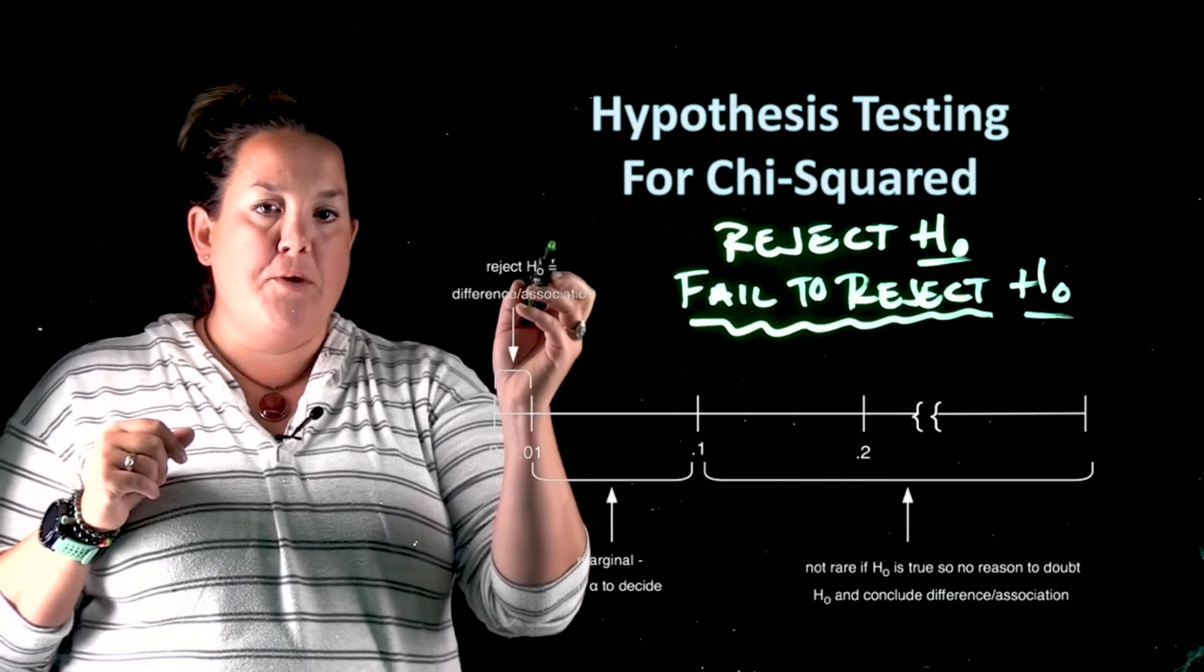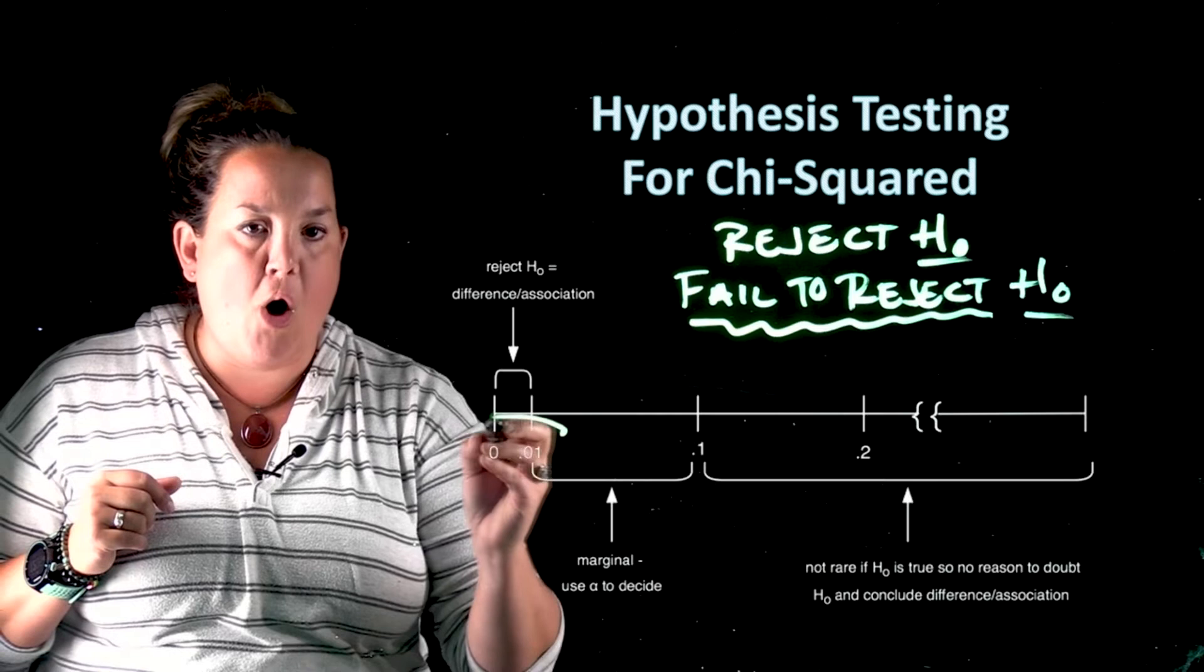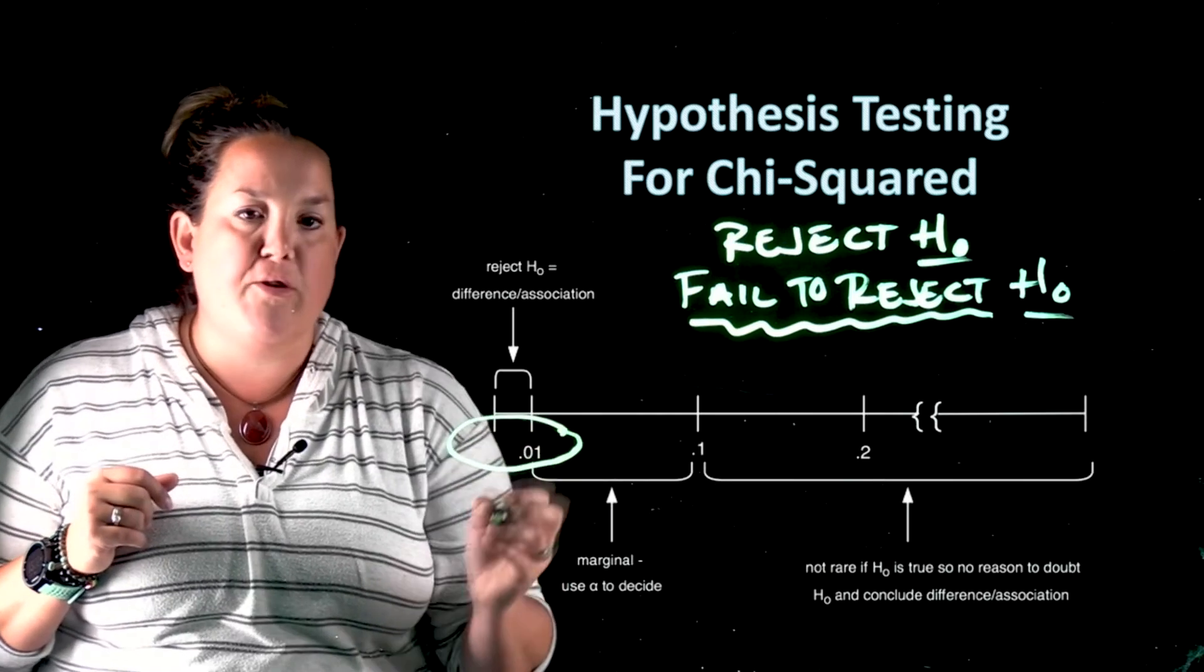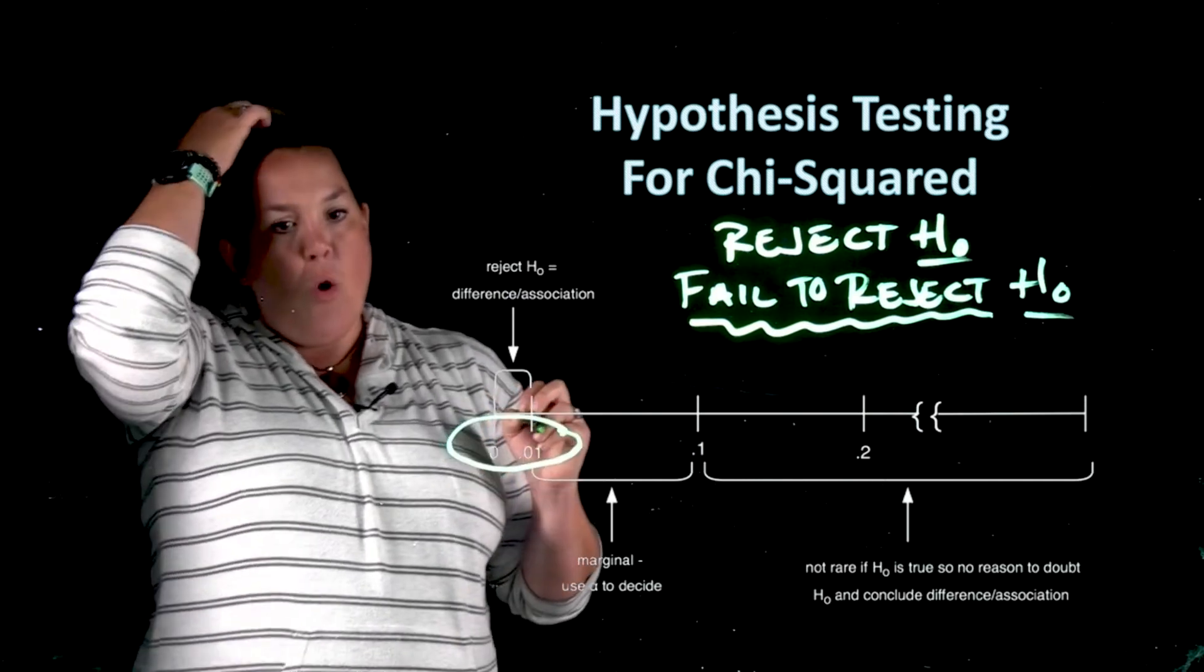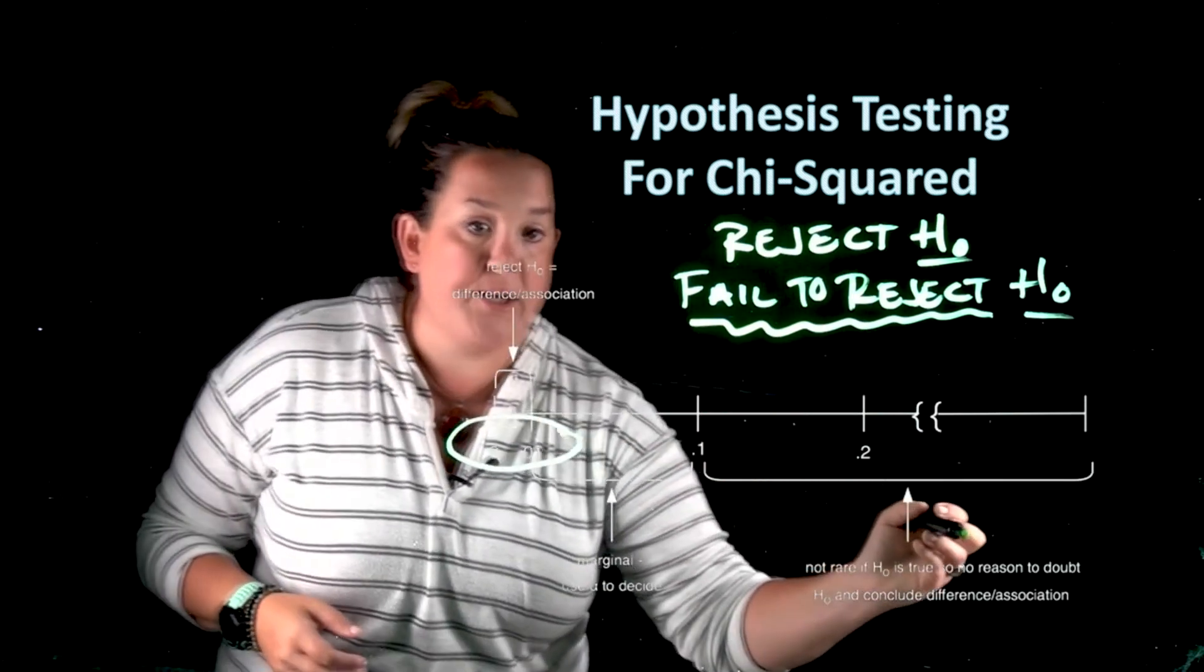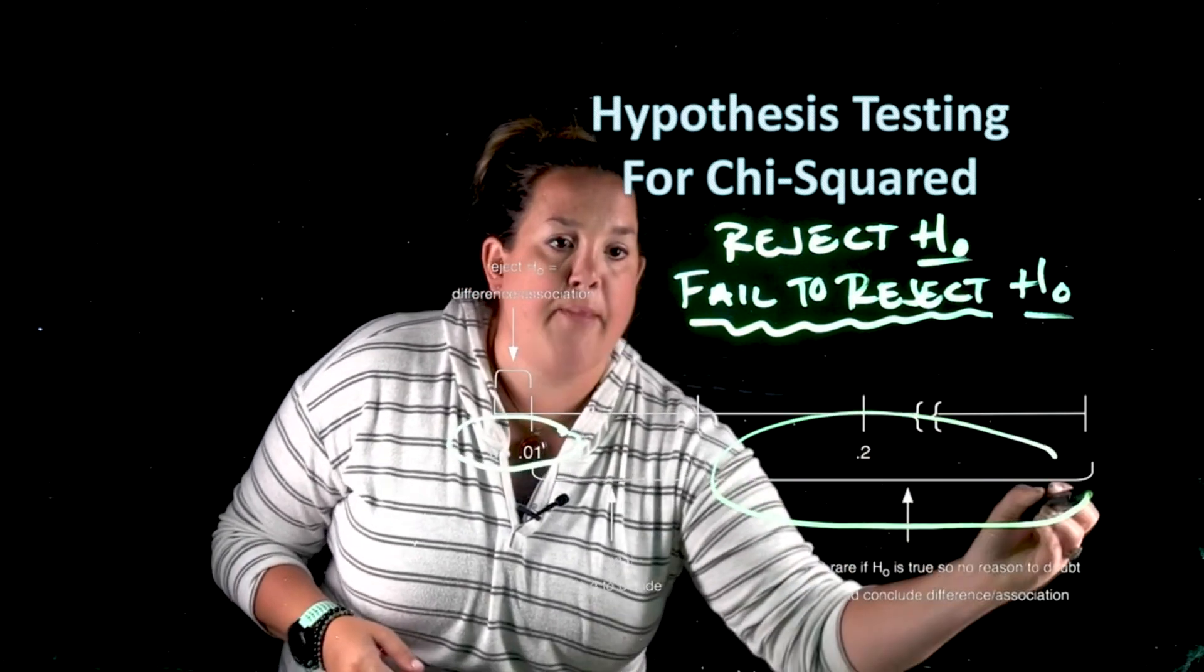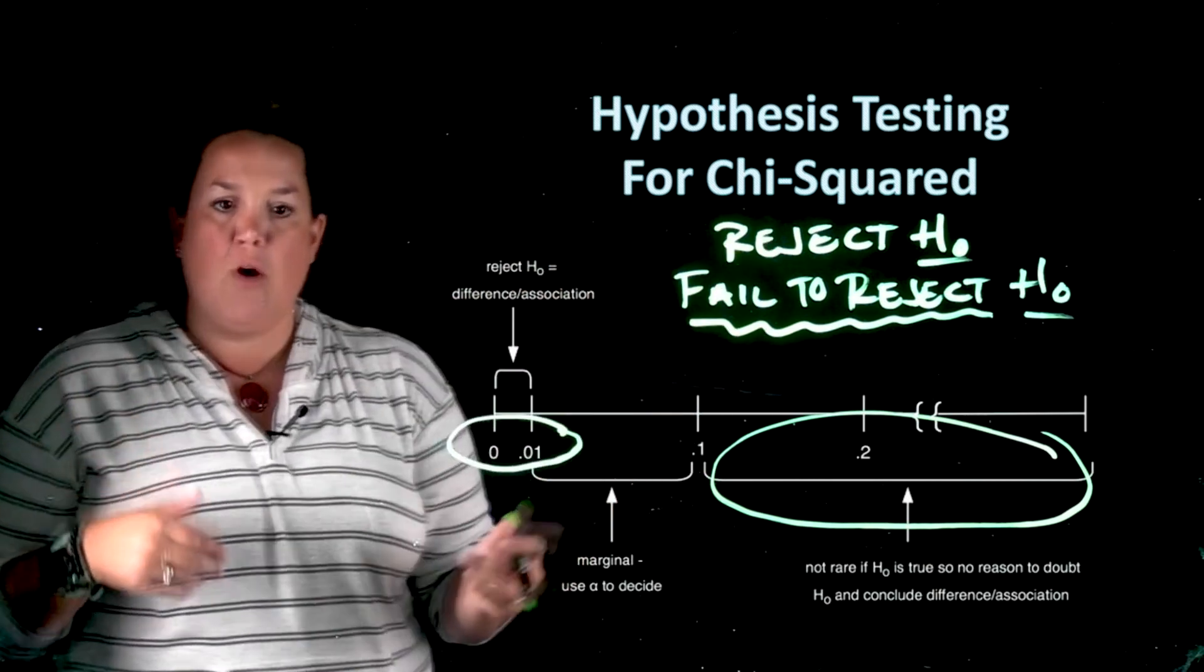So when we talk about reject the null, we know definitively if we have a small p-value. So in the zero to 0.1 range, we're going to make a decision to reject the null. We also know that if we have a large p-value, we're going to be in this area right here and that's going to be failing to reject the null. So something that has a lot of area in it.